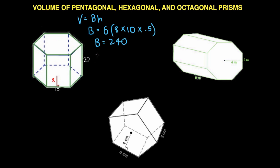Now we just multiply that by the height, which is 20. Volume equals 240 times our height which is 20, and that gives us a volume of 240 times 20 is 40.